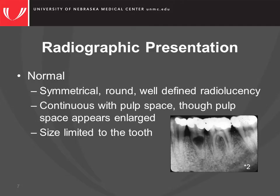Accompanying signs of apical periodontitis may also be seen. Lesions normally occur in a single tooth, but if there is trauma to multiple teeth, you can see multiple lesions in those teeth.